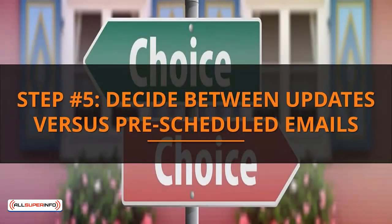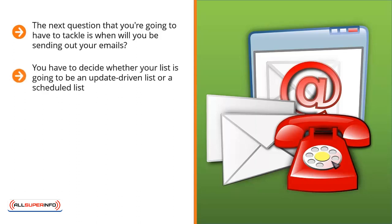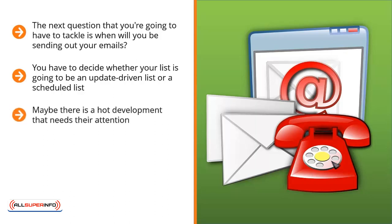Step number five: decide between updates versus pre-scheduled emails. The next question you're going to have to tackle is when will you be sending out your emails. Your squeeze page sets up your list members' expectations. If you do things right, your list members should not be surprised that you're sending out emails to them. You have to decide whether your list is going to be an update-driven list or a scheduled list. People who sign up for update-driven lists expect emails to come at any time — maybe there's late-breaking news in your niche.